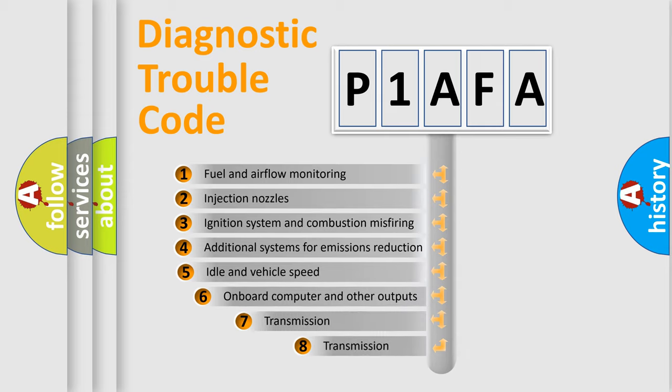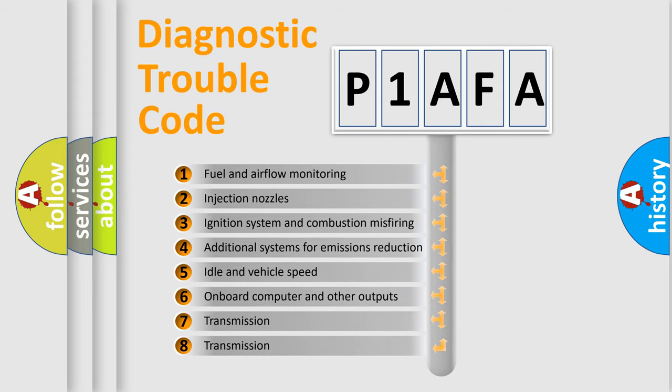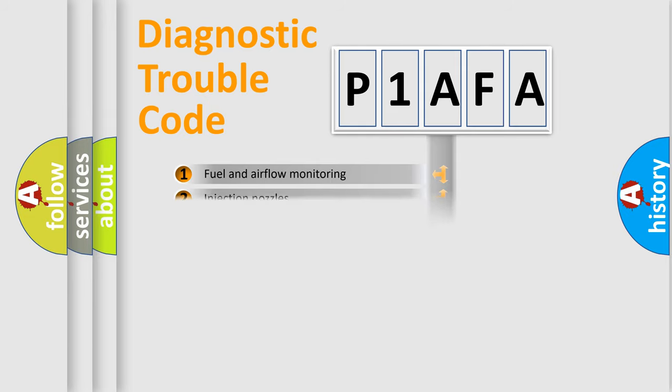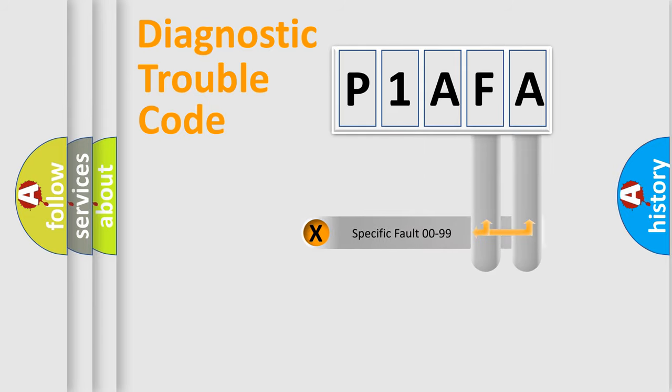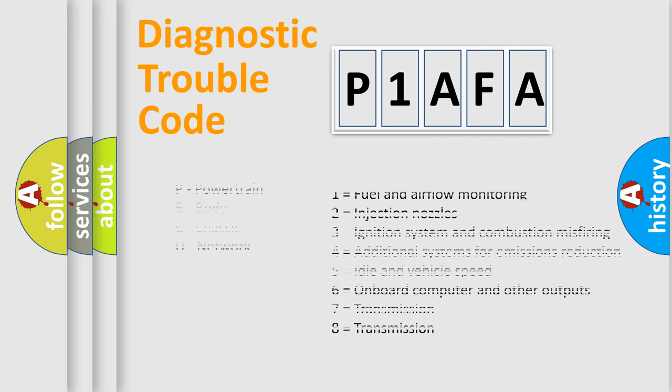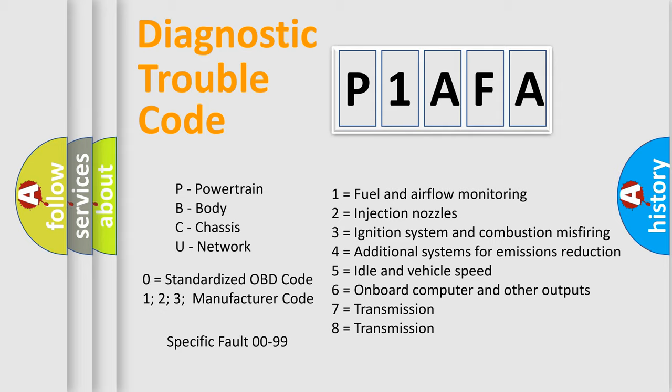The third character specifies a subset of errors. The distribution shown is valid only for the standardized DTC code. Only the last two characters define the specific fault of the group. Let's not forget that such a division is valid only if the other character code is expressed by the number zero.